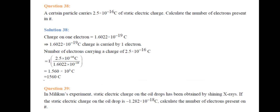Next question: A certain particle carries 2.5 × 10⁻¹⁶ coulombs of static electric charge. Calculate the number of electrons present in it. The charge of one electron is 1.6022 × 10⁻¹⁹ coulombs. Number of electrons = (2.5 × 10⁻¹⁶) / (1.6022 × 10⁻¹⁹) = 1.560 × 10³ electrons.